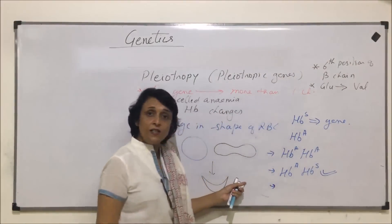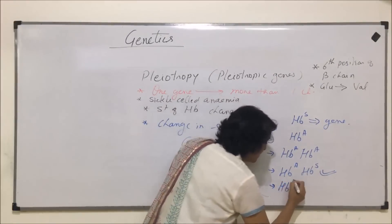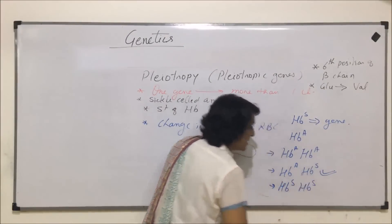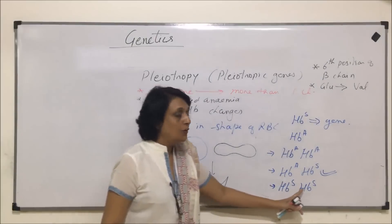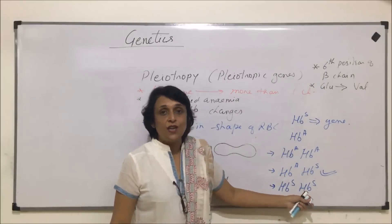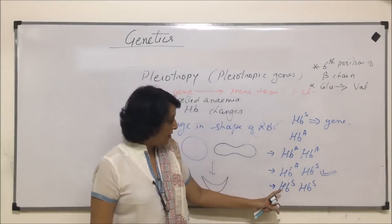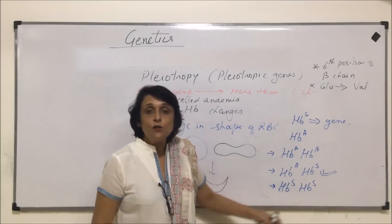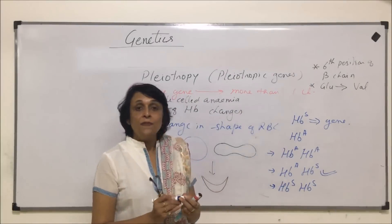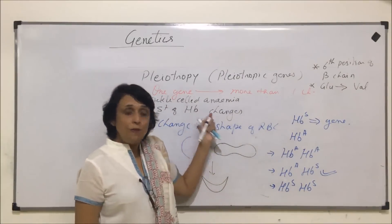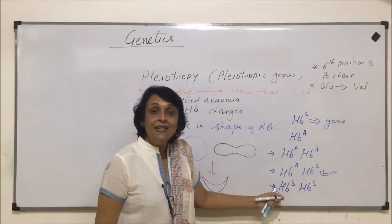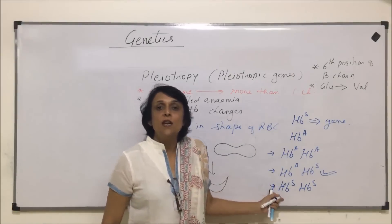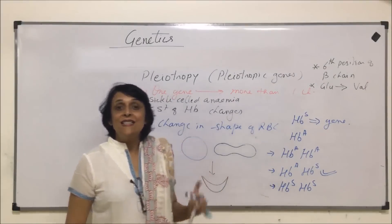The third situation is HBS/HBS — here both genes are the mutated genes, which means both alleles produce defective hemoglobin and sickle cell RBCs. All RBCs are going to be sickle cells, and normally these individuals do not survive.